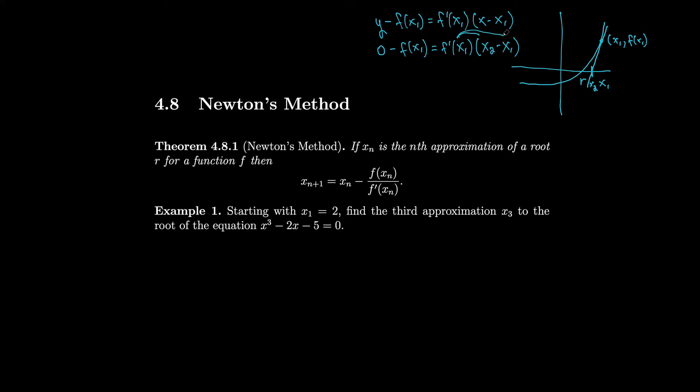We distribute the f' and then we want to get x₂ all by itself. So we add f'(x₁) times x₁ to both sides, so we get f'(x₁) times x₁ minus f(x₁) equals f'(x₁) times x₂.